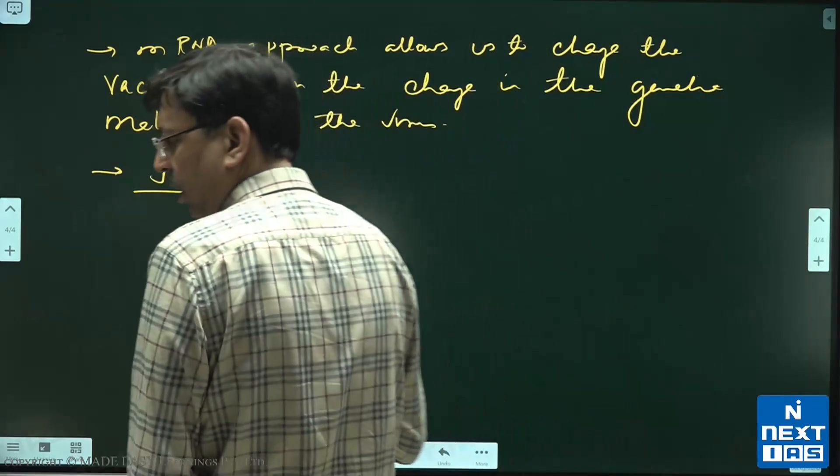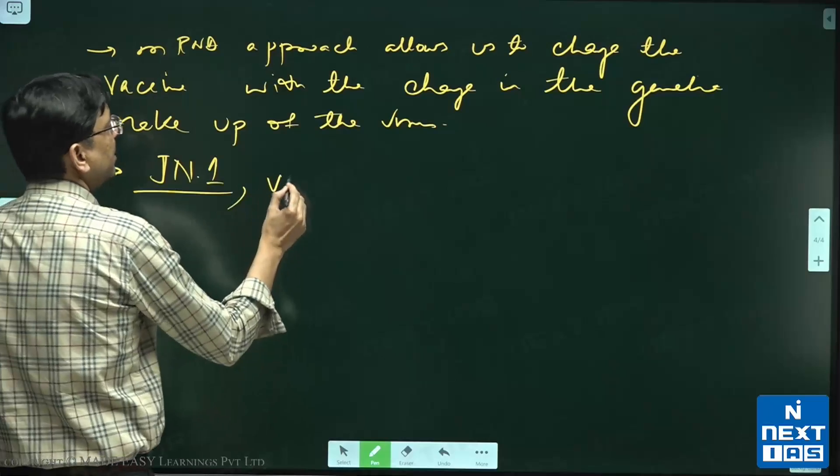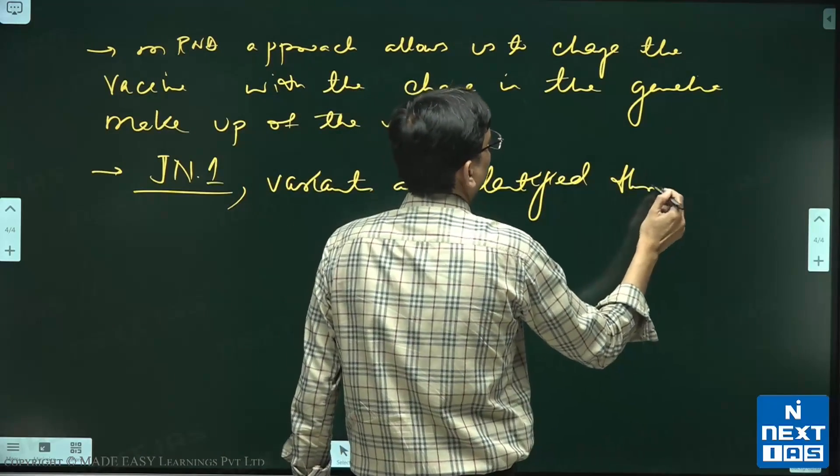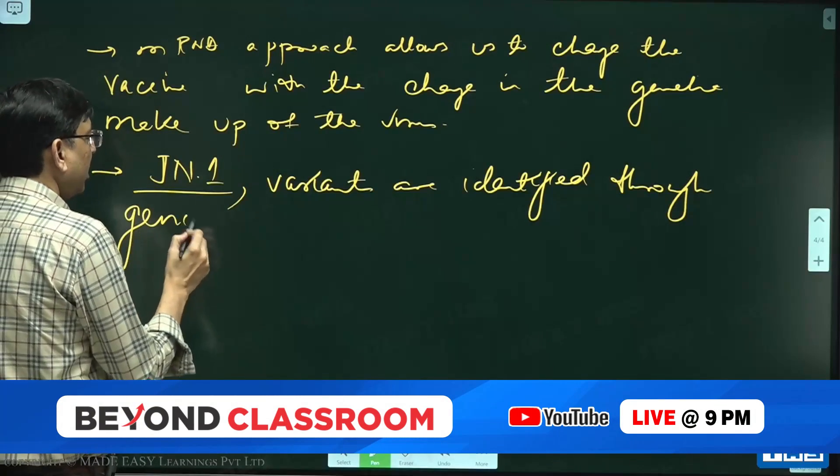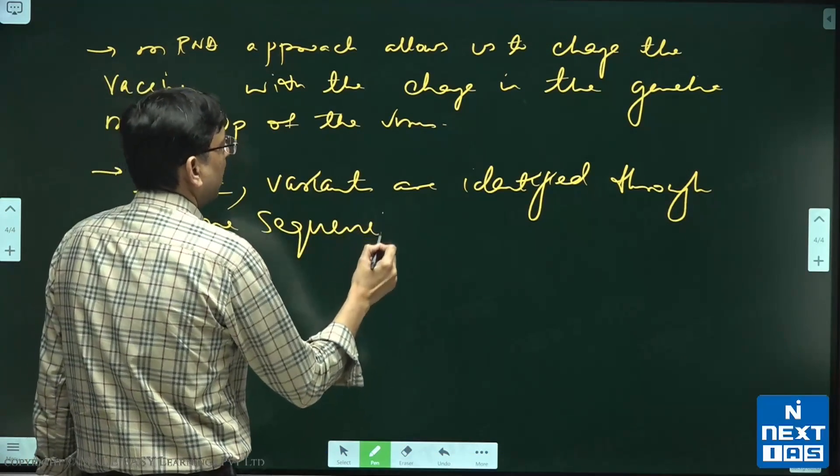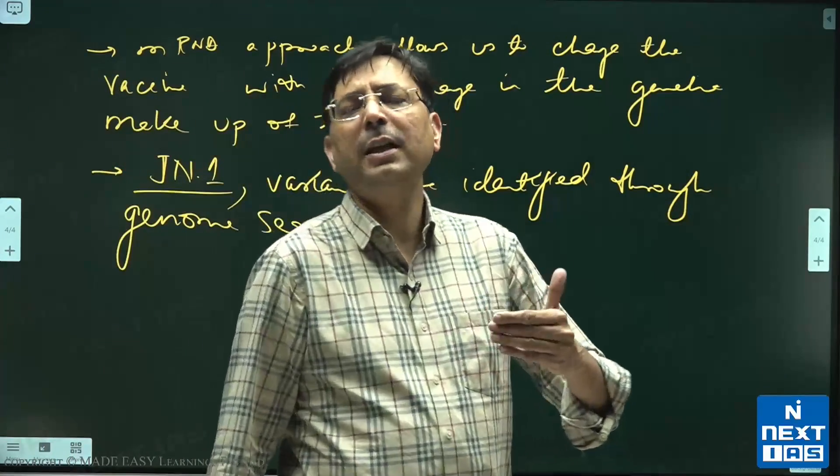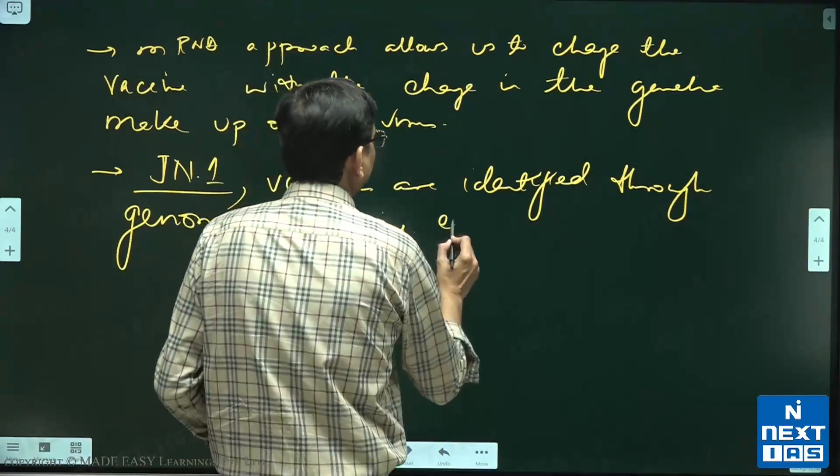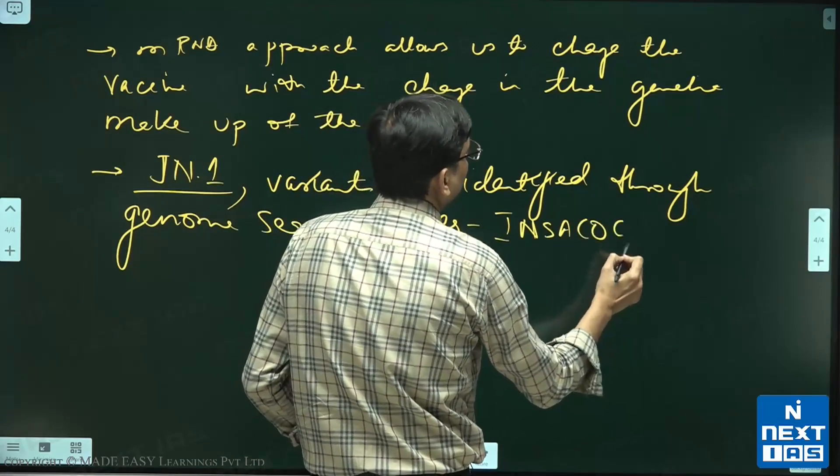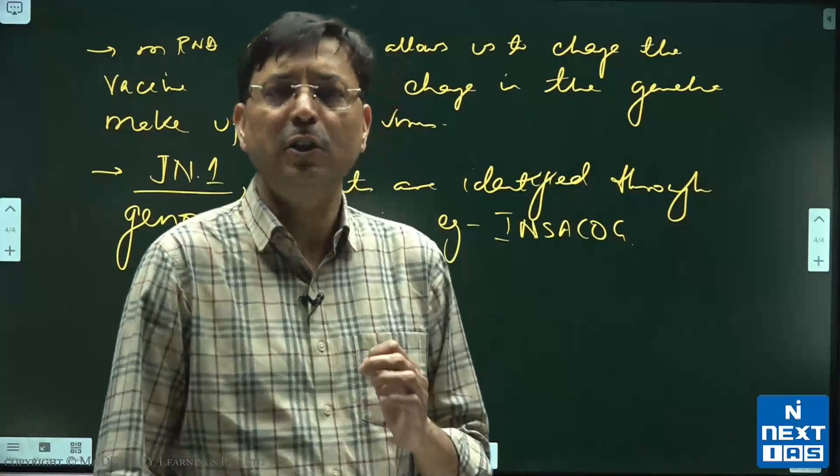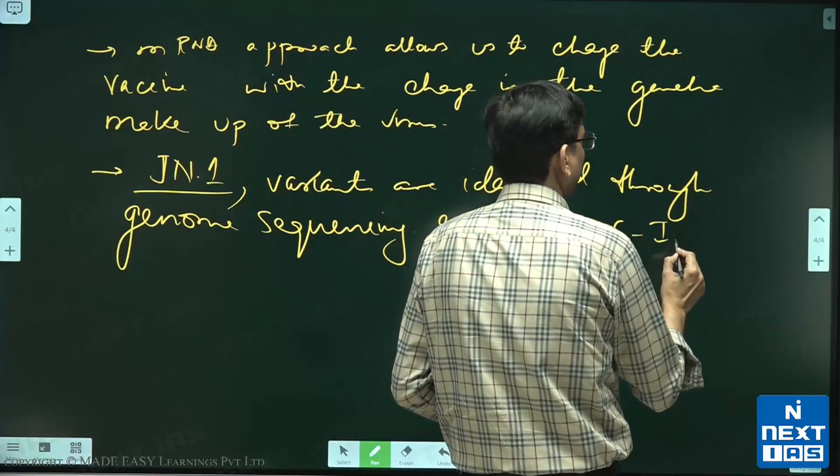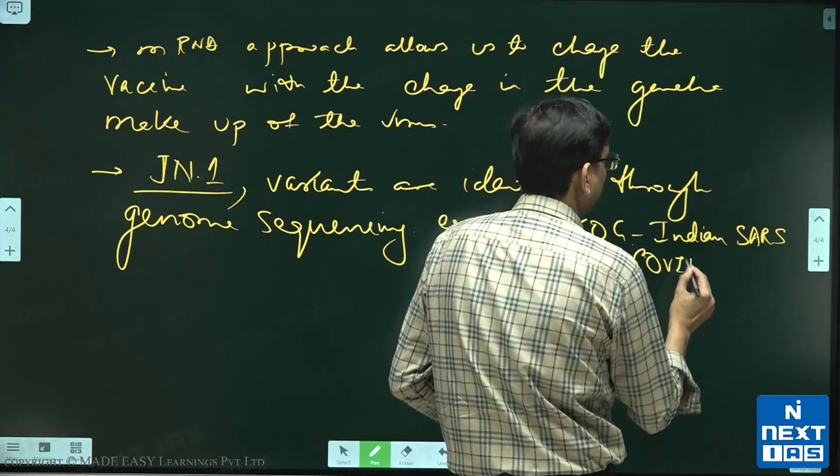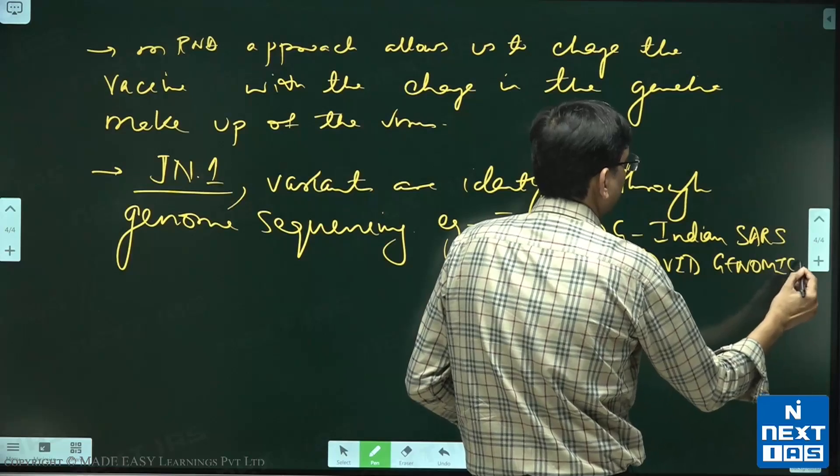How do we know that this is a new variant of corona or it is the same variant? Actually, the variants are identified through genome sequencing. Genome sequencing is studying the genetic material. Like in corona, the genetic material is RNA. Everybody knows, for example, India is having a program called INSACOG - Indian SARS-CoV-2 Genomics Consortium.